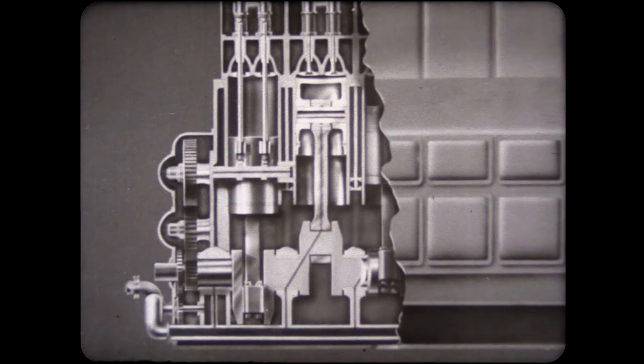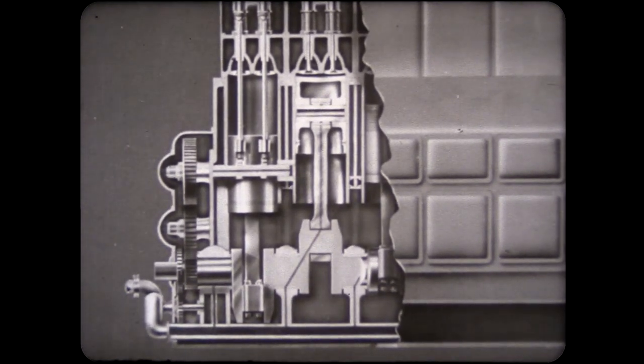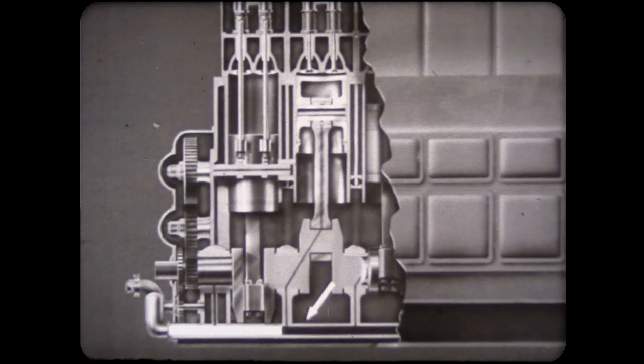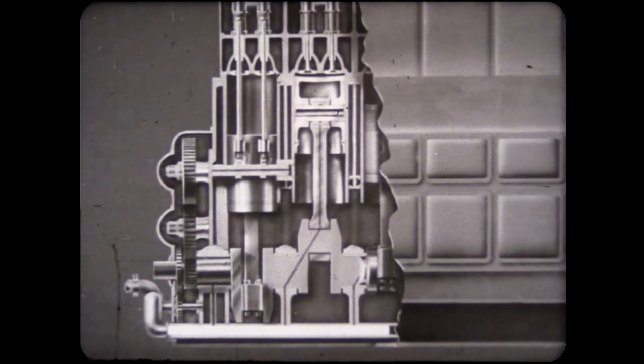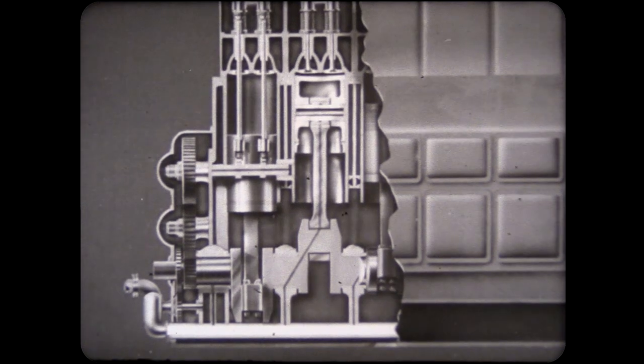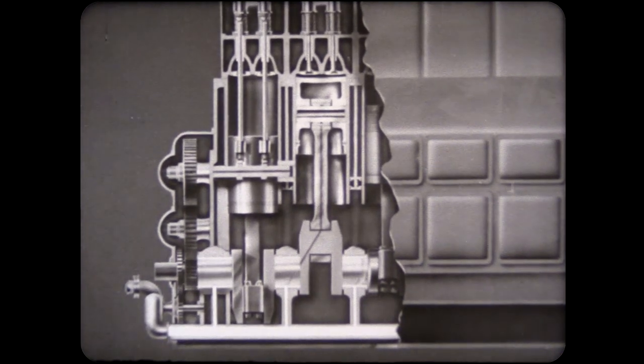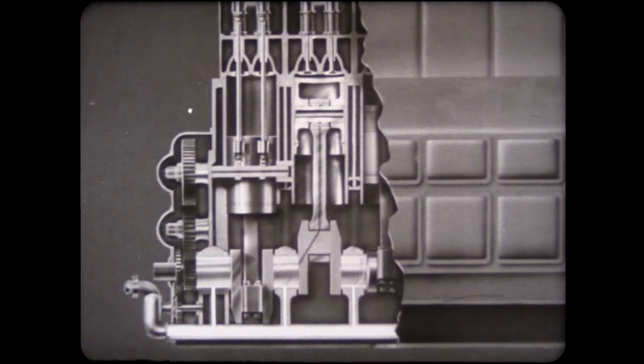In a diesel engine of the common type illustrated by this diagram, lubricating oil is forced under pressure into this oil header or manifold. From here, individual leads carry the oil to each main bearing. Channels in the bearing surface distribute the oil evenly over its full width.